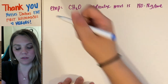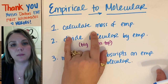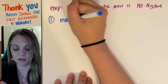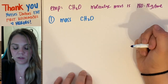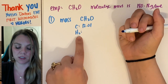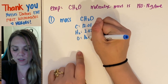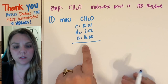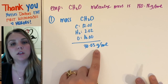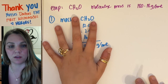So the very first thing we do — rule number one — calculate the mass of your empirical formula. So I need the mass of my empirical CH2O. Each carbon is 12.01, each hydrogen is 1.01, there are two of them so 2.02, and one oxygen is 16. Add it all up: 30.03 grams per mole would be the molecular mass of my empirical formula.